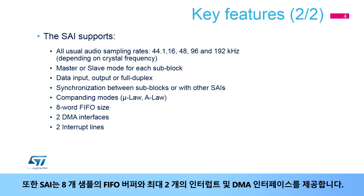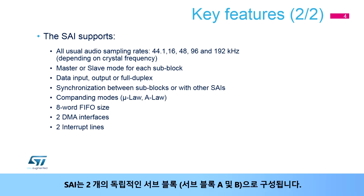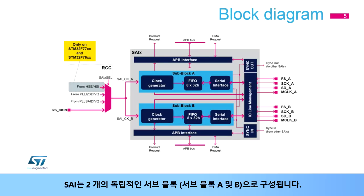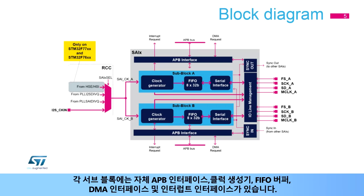The SAI also provides a FIFO buffer of eight samples and up to two interrupts and DMA interfaces. The SAI is composed of two independent sub-blocks, sub-block A and B. Each sub-block has its own APB interface, clock generator, FIFO buffer, DMA interface, and interrupt interface.